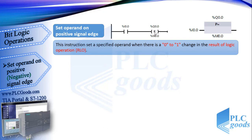This is like the previous instructions, but this instruction is used as an output. It sets a specified operand only for one program cycle when there is a 0 to 1 change in the result of logic operation RLO. See this simple program.